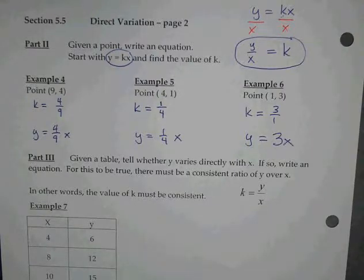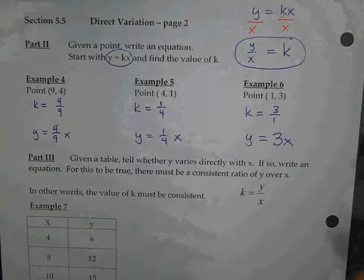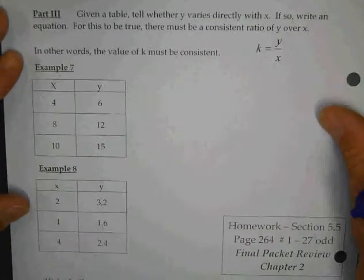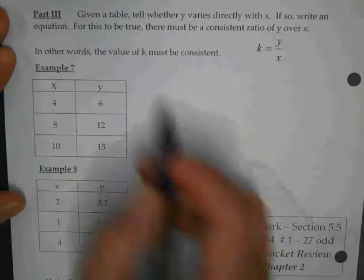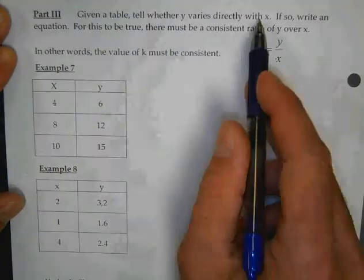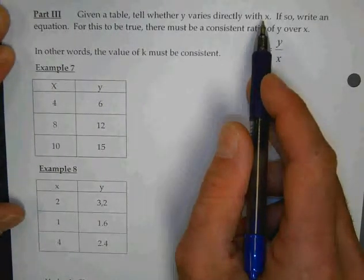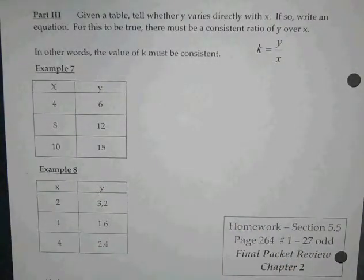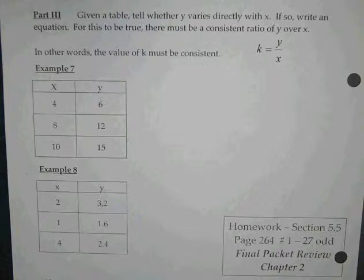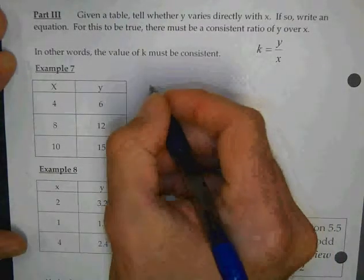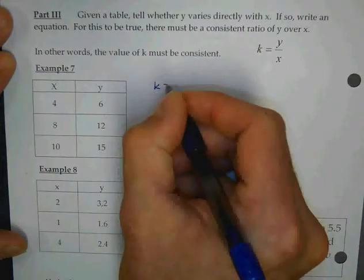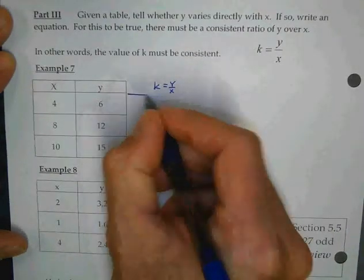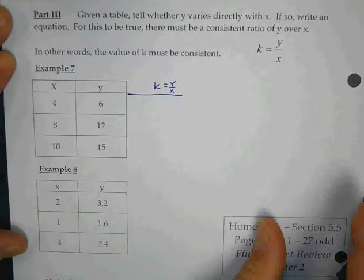Today's stuff should be hopefully very straightforward. Now, our last two examples were given tables. And it says, given the table, figure out if it varies directly. Now, if it varies directly, it's got to be consistent. The y over x each time has to be the same fraction. So what I want you to do is put another column here that says k equals y over x, and we're going to try to figure this out.